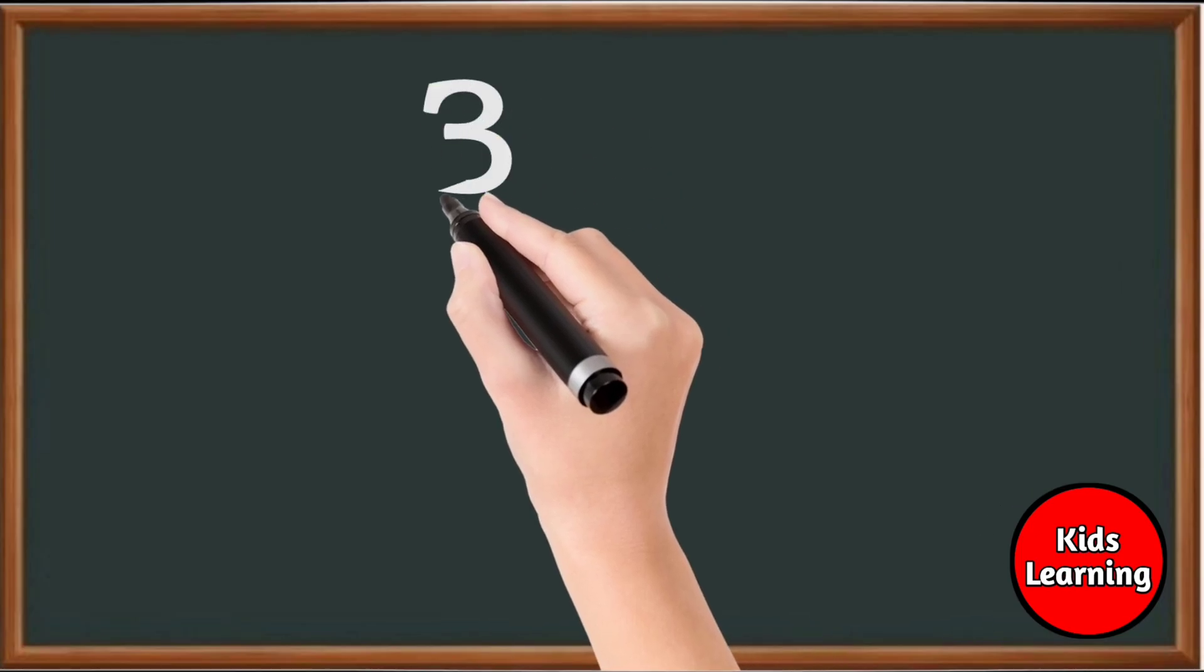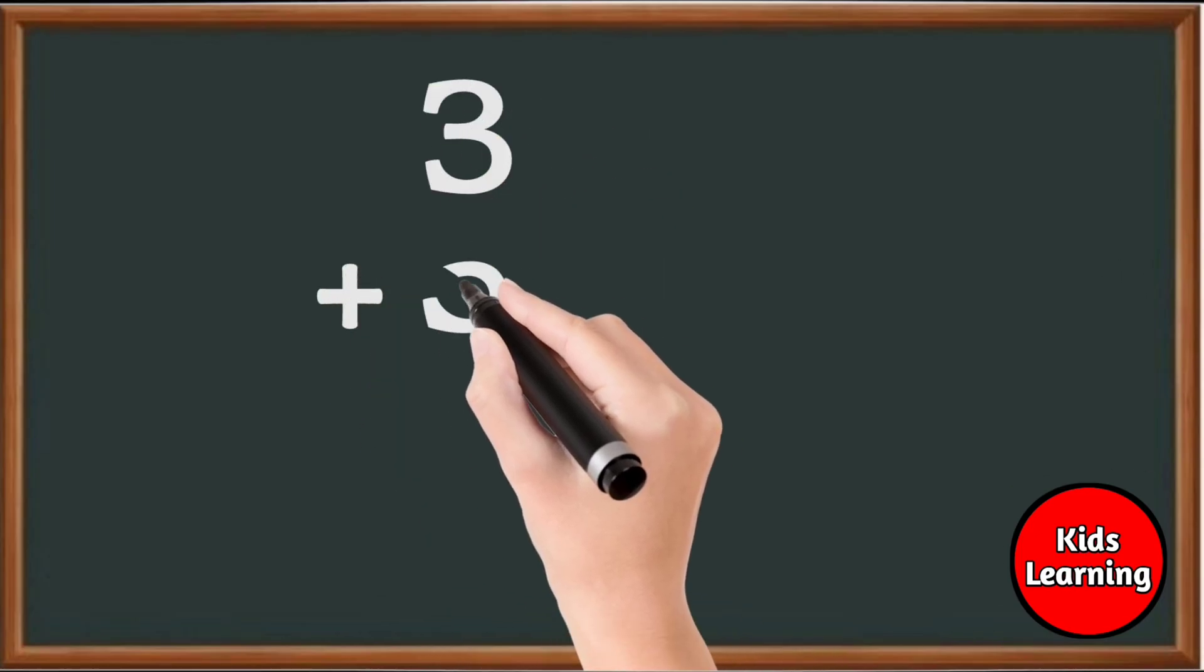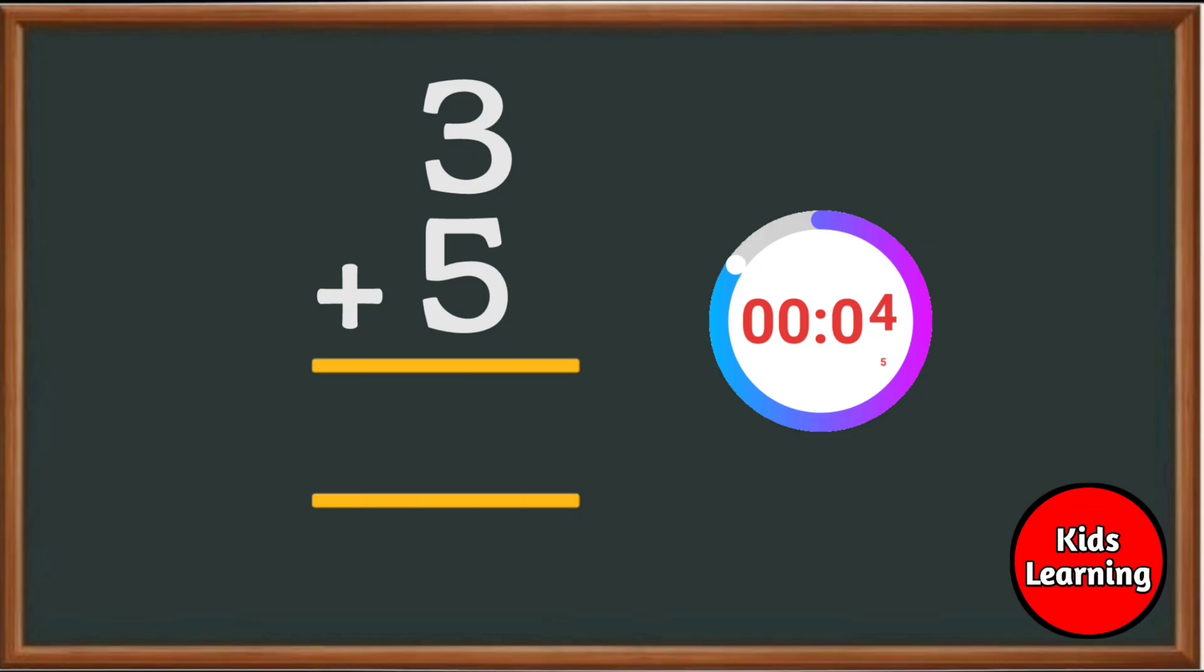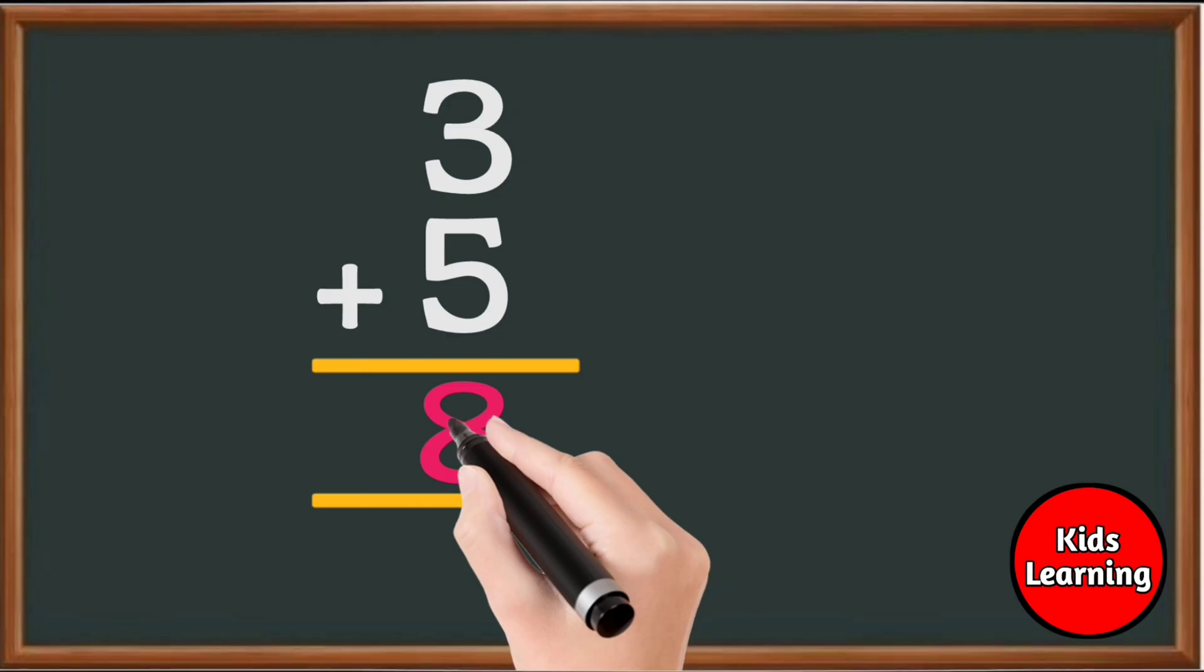Next question. What is 3 plus 5? The correct answer is 8.